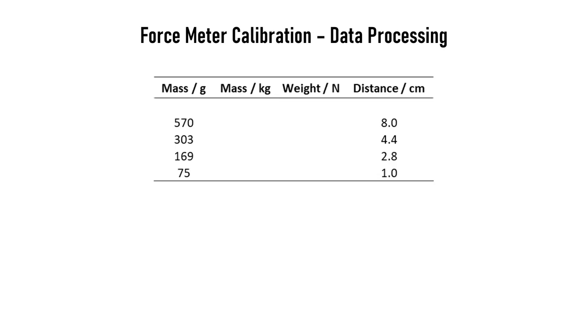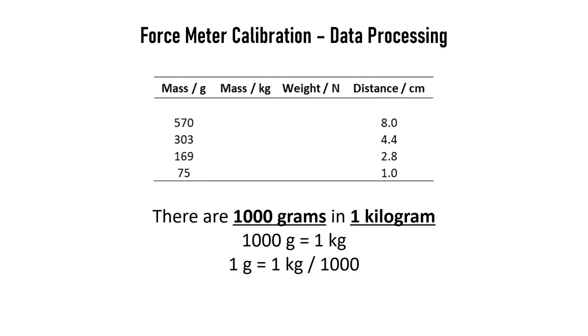So to begin with, we need to process our data. We've got the masses of the objects that we weighed and the distance they pulled the elastic band down. Now, we need to convert these masses from grams into kilograms. We can remember that there are a thousand grams in one kilogram. This can help us work out the conversion. Because if we divide both sides by a thousand, we end up with one gram is equal to one kilogram divided by a thousand. So, if I need to change between grams and kilograms, I just need to divide the number of grams by a thousand.